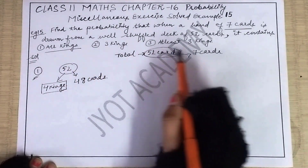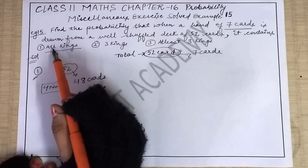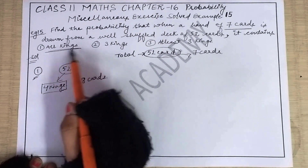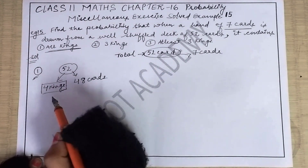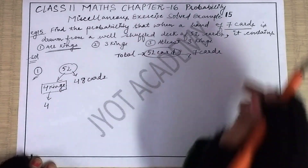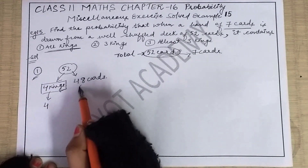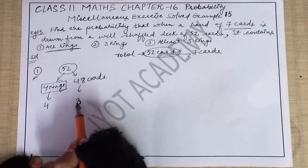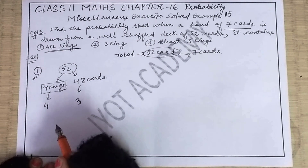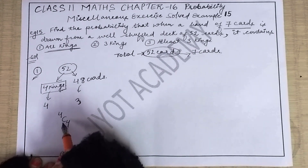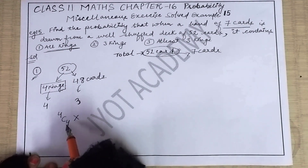Out of 52 cards, we have 4 kings, and the remaining cards are 52 minus 4, that is 48 cards which are not kings. The condition is based on kings, so for the first condition — all kings — you have to select all four kings from four kings. To complete the seven cards, you pick the remaining three cards from the 48 non-king cards. So four plus three equals seven cards.